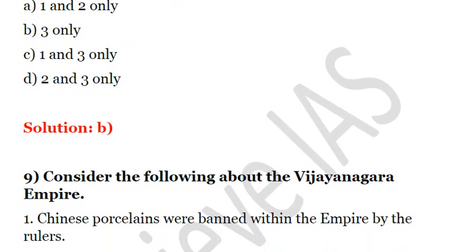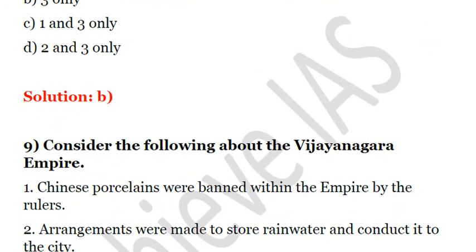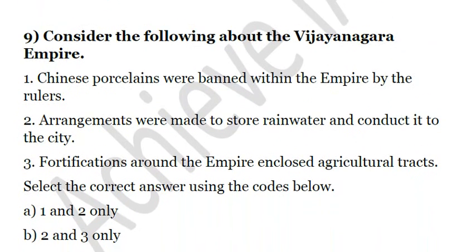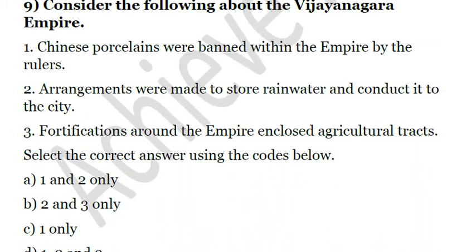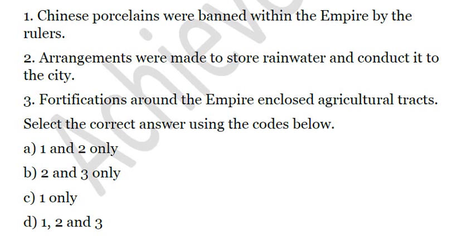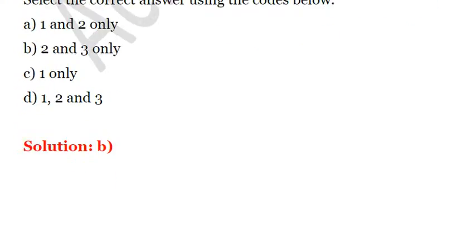The next question: consider the following about the Vijayanagara Empire. First, Chinese porcelains were banned within the empire by the rulers. Second, arrangements were made to store rainwater and conduct it to the city. Third, fortifications around the empire enclosed agricultural tracts. Chinese porcelains were not banned within the empire, so the first is incorrect. The answer is B: second and third only. Proper rainwater storage and drainage systems were in place, and fortifications did enclose agricultural tracts.